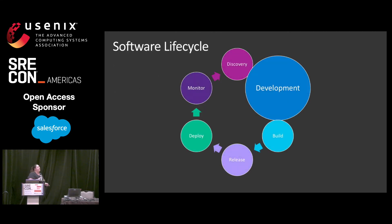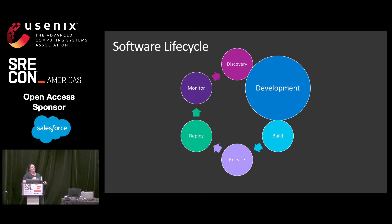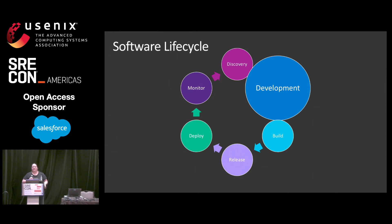Another part of the problem is, if I think about the software life cycle and all these different phases that software has to go through, so much of the information out there is focused on development, ignoring all of these other pieces. It feels like people are out there randomly trying north, east, south, west, trying to navigate where they're going to build reliable systems.